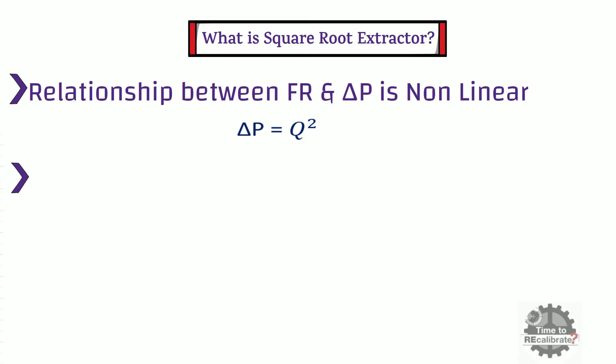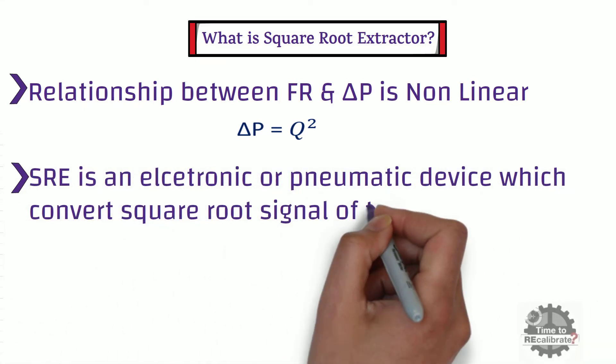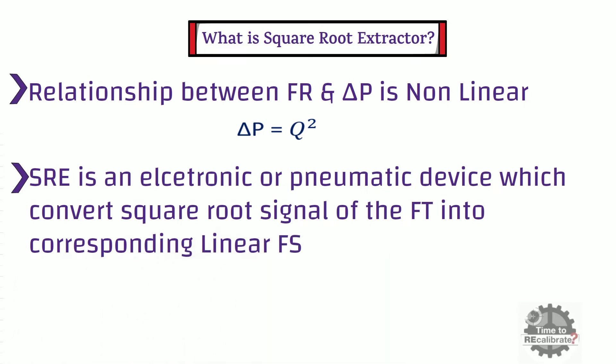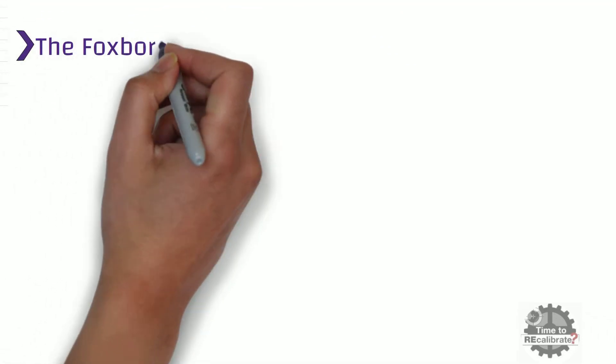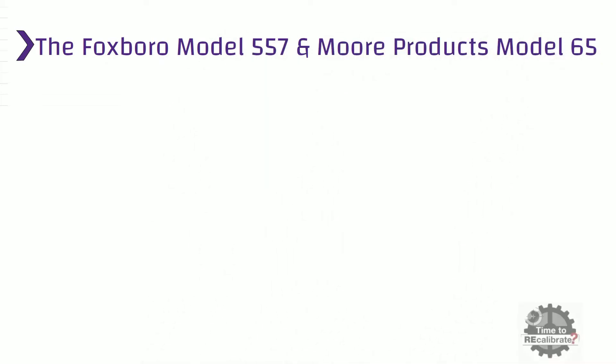Square root extractor is an electronic or pneumatic device which converts square root signal of the flow transmitter into corresponding linear flow signal. In past, or days of pneumatic instrumentation, this square root function was performed in a separate device called square root extractor. The Foxboro Model 557 and Moore Model 65 are the devices which were used for square root extraction in the past.